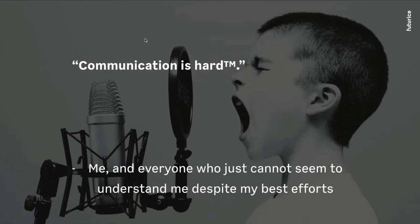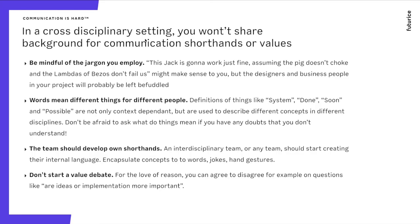If you have ever talked to anyone, even friends or family, you know communication is hard. Communication in cross-disciplinary teams is very difficult because it is always based on shared values and shorthands. As a technical person, if I say 'this check is going to work just fine, assuming the peak doesn't choke and the lambdas of Bezos don't fail us' — it makes sense if you are technical and speak Finnish. It doesn't make any sense if you are non-technical.